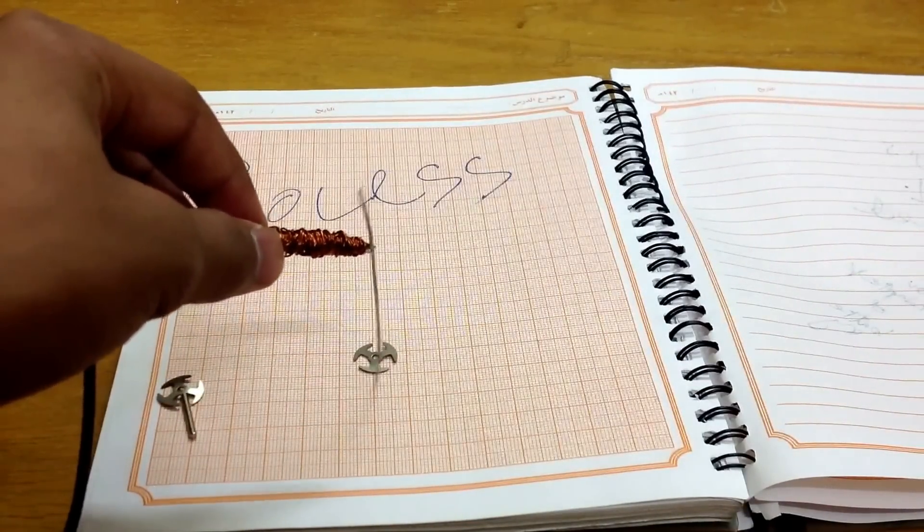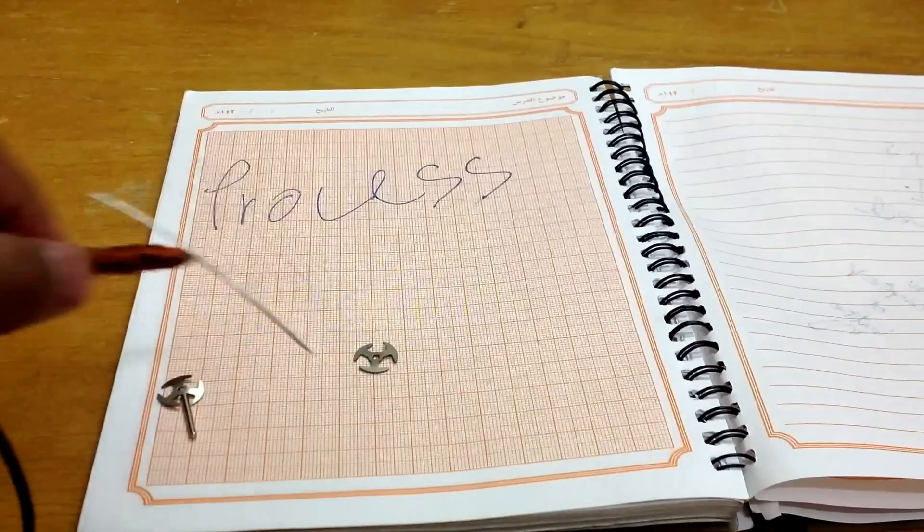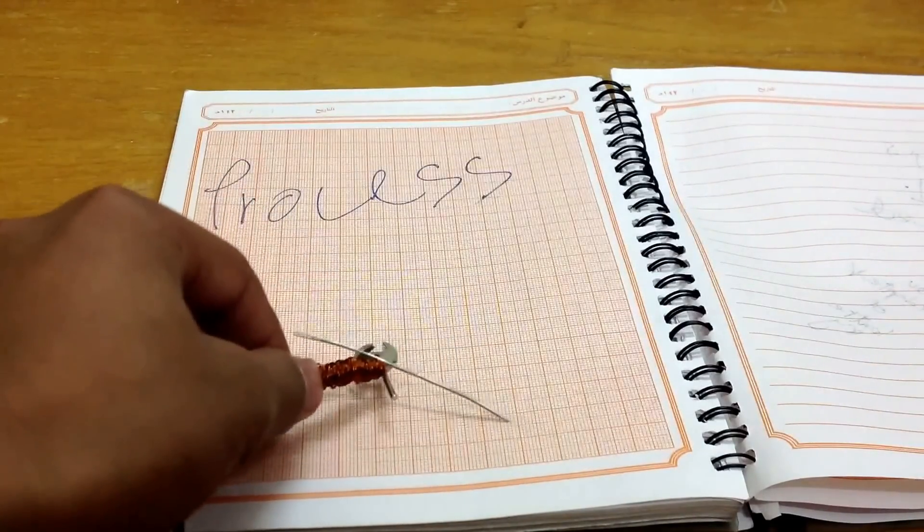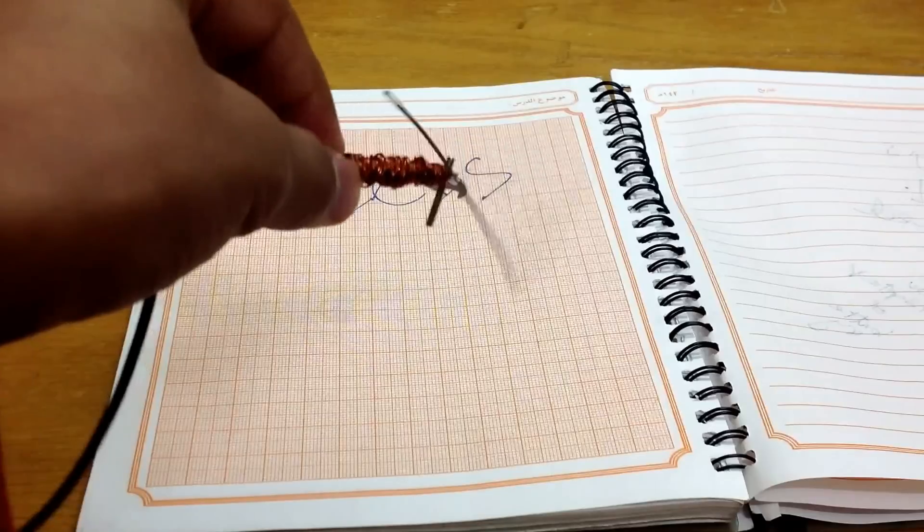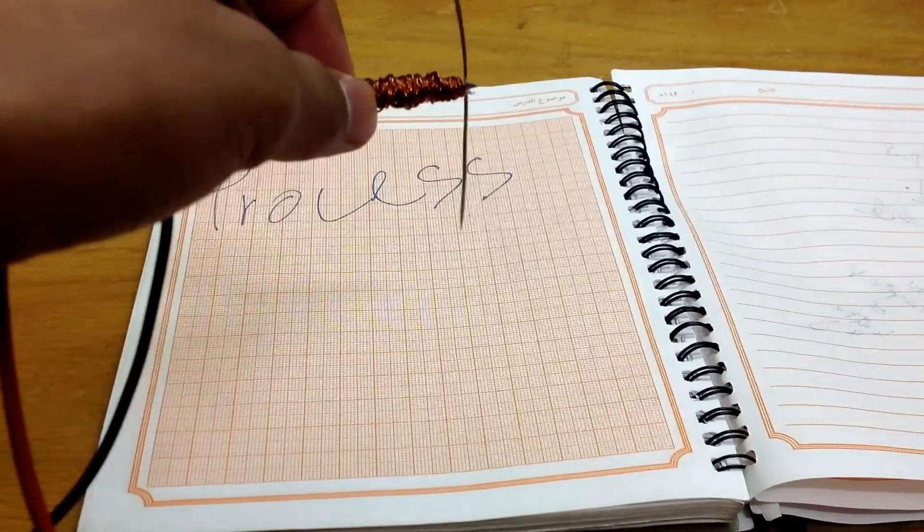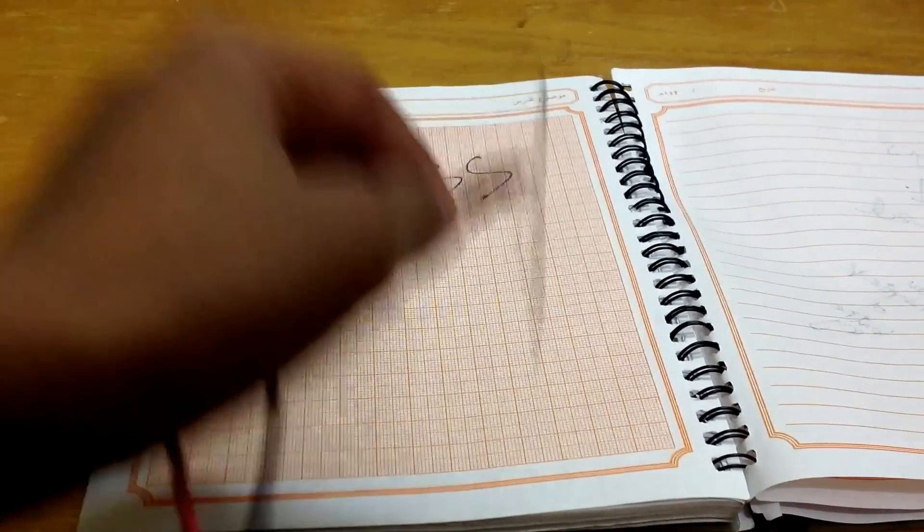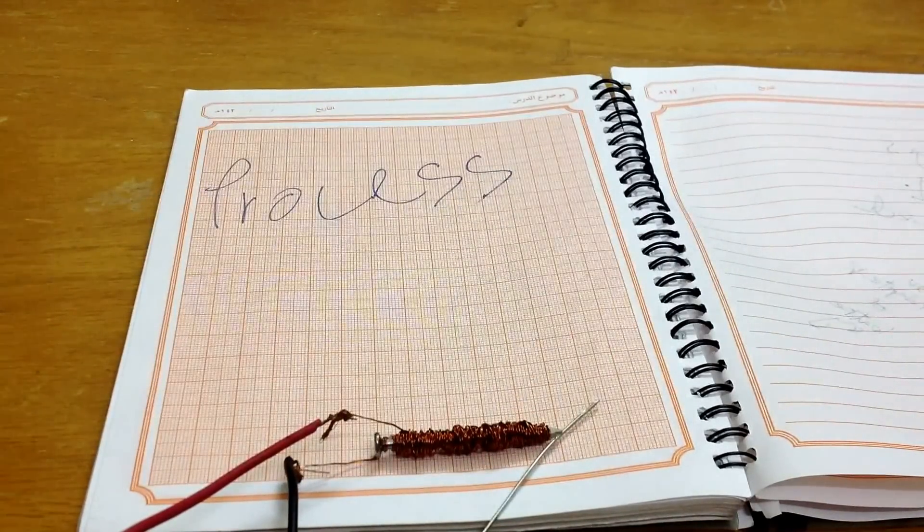Switch on. Oops. Switch off. Ok, effect is still there. Ok, so that's how we're making a simple electromagnet.